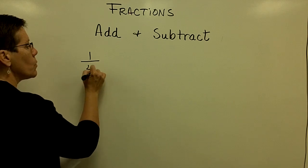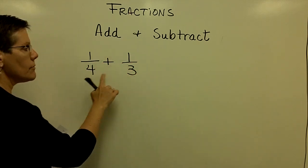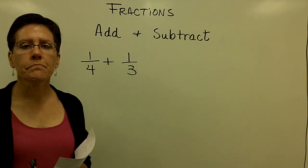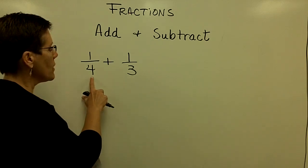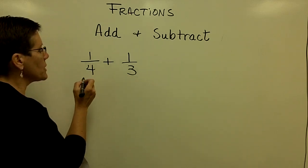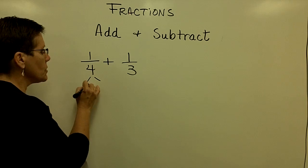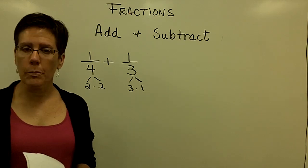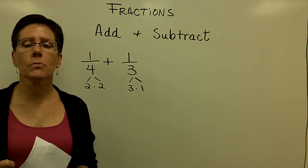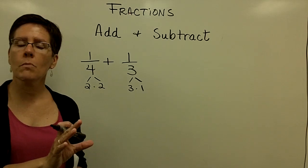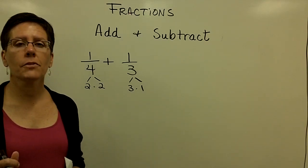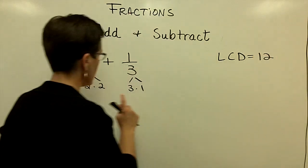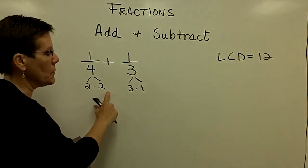If I were to add 1 fourth and 1 third, I have to look at the two denominators, the 4 and the 3, and find a common denominator. That common denominator includes the factors of these denominators. The factors of 4 are 2 times 2, and the factors of 3 are just 3 times 1. Because there is no repetition in terms of common prime factors, I need to use them all. The least common denominator is 12, because it is represented by 2 times 2 times 3.